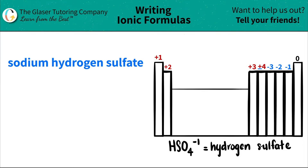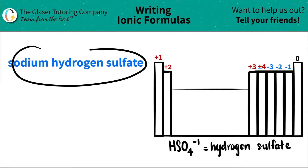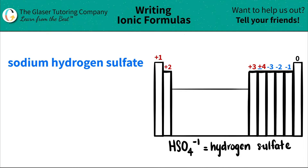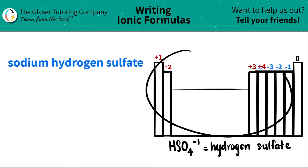Today we are going to be writing the formula for the ionic compound sodium hydrogen sulfate. So let's work from left to right and see what we get. The first thing I see is sodium. So I scan the periodic table to see if I can find a sodium, and yeah, I found it. It's right over here. Sodium's in group one, and it's represented by Na.